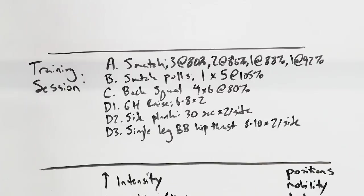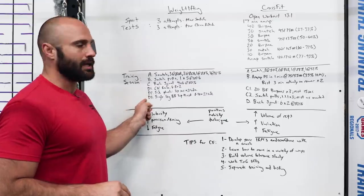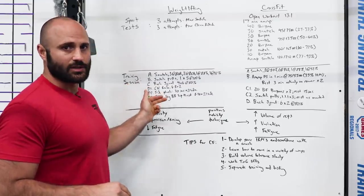Then back squats, four sets of six at 80% as accessory work for your legs. And then an accessory series of three different movements. So over here you see it says D1, D2, D3. What that indicates essentially is a circuit.